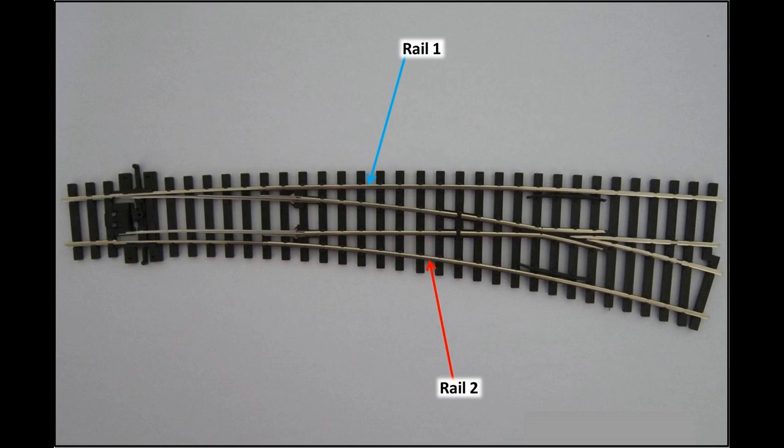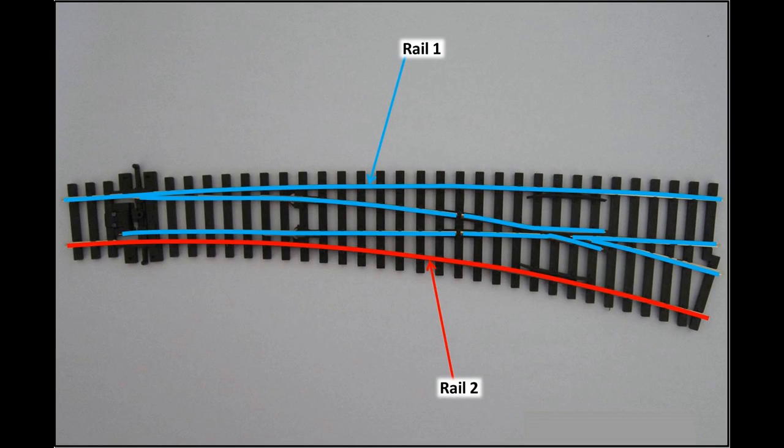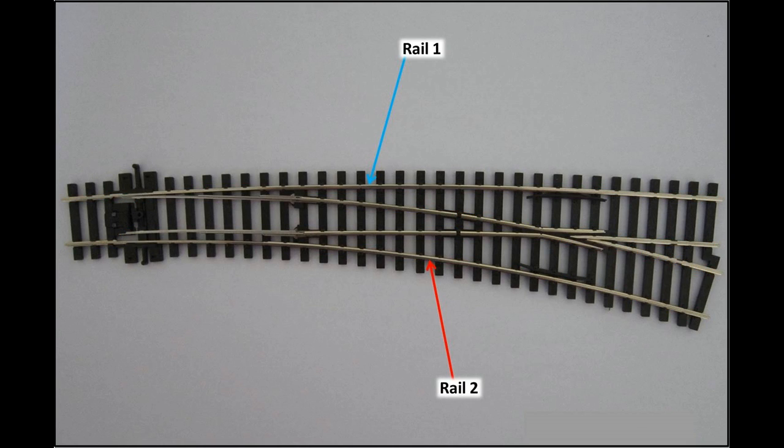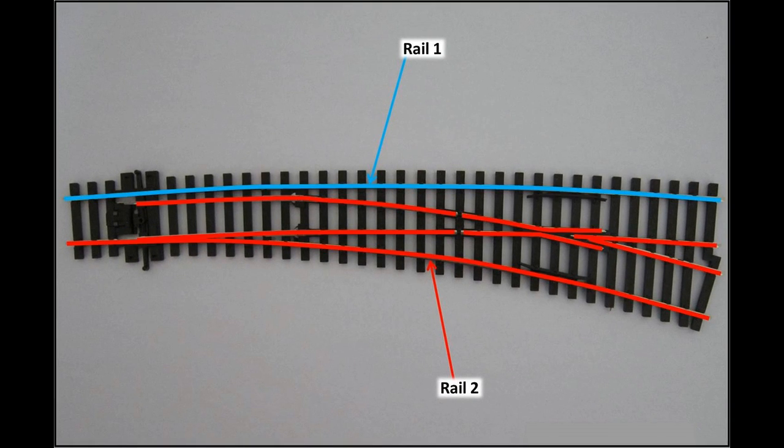So when viewed electrically, the turnout looks like this when the switchblades are connected to rail 1 and like this when the switchblades are connected to rail 2.